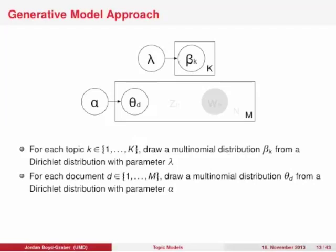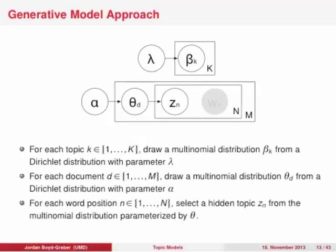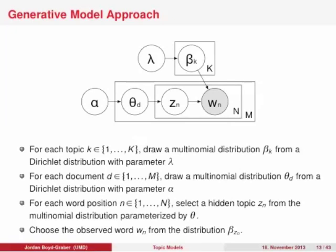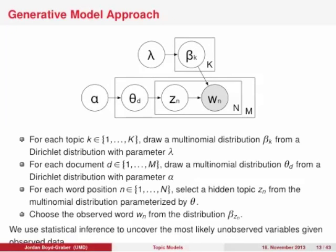A little deeper into the model: it assumes that each observed word is associated with one and only one topic — this is called a topic assignment, z_dn. Each token position gets associated with one and only one topic, and then based on that you generate the observed word. We use statistical inference to figure out the most likely unobserved variables — in this case the z's — that best explain our dataset, and that will tell us what the betas and thetas are.